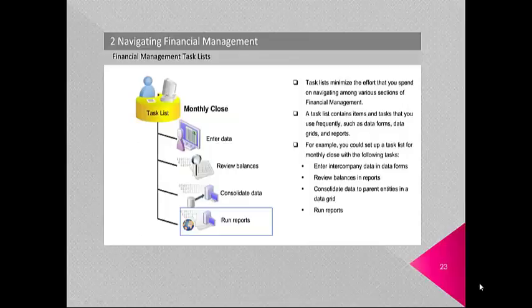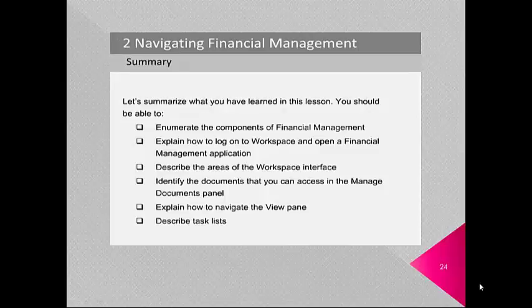Task lists minimize the time you spend navigating among various sections of Financial Management. A task list contains items and tasks you use frequently, such as data forms, data grids and reports. For example, you could set up a task list for monthly close with tasks such as: enter intercompany data in data forms, review balances in reports, consolidate data to parent entities in a data grid, and run reports. To summarize: you can enumerate the components of Financial Management, log into workspace, open a Financial Management application, describe the workspace interface, identify documents in the manage document panel, navigate the view pane, and describe task lists.